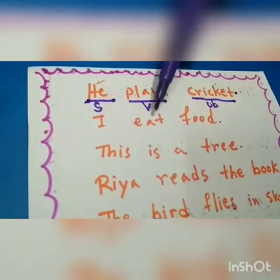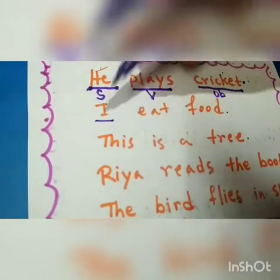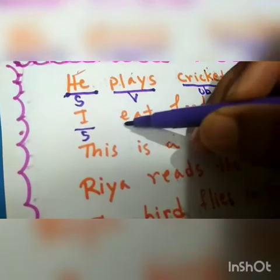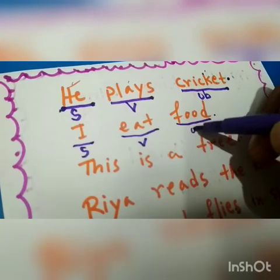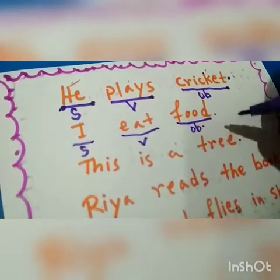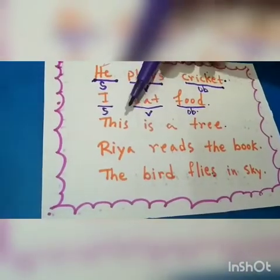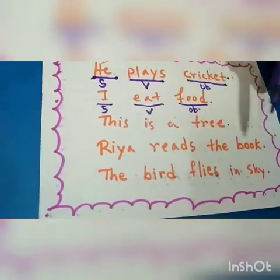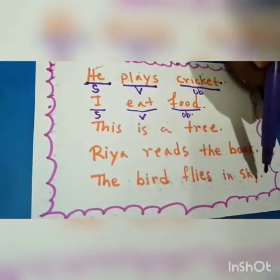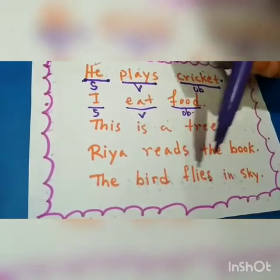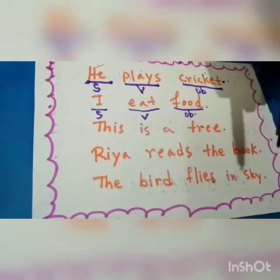Next is 'I eat food.' Here 'I' is also the subject, 'eat' is the verb or action word, and 'food' is the object. And there are some more sentences like 'This is a tree,' 'Rhea reads the book,' and 'The bird flies in the sky.' In this last sentence there is no object, but it is also a sentence because the other rules are there and it also carries a meaningful thought. That's why it is also a sentence.